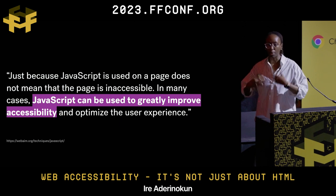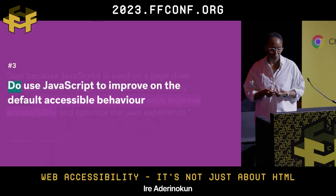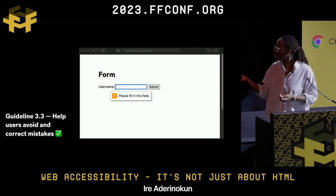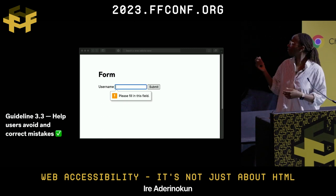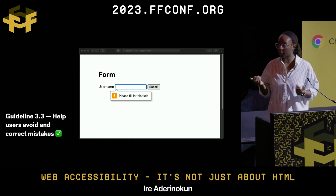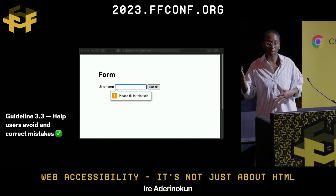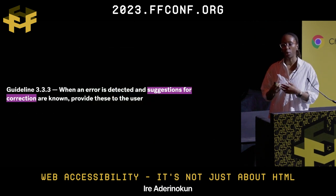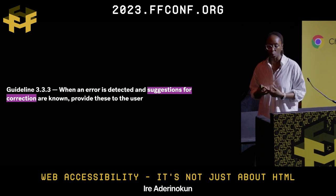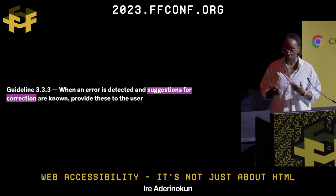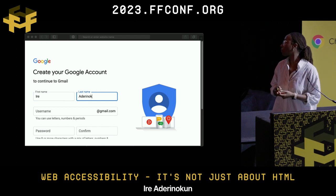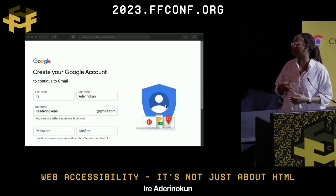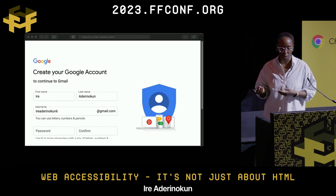We can actually improve on default accessible behavior with JavaScript. Looking at guideline 3.3 about helping users avoid and correct mistakes — a simple HTML form fulfills this to some extent, like a required field showing 'please fill in this field'. But the guideline suggests going further, also providing suggestions for correction where possible. This is something we can only really achieve with JavaScript. For example, Google does a good job: if you type an email that already exists, they tell you it's already taken and provide suggestions for correction — something you can really only do with JavaScript.